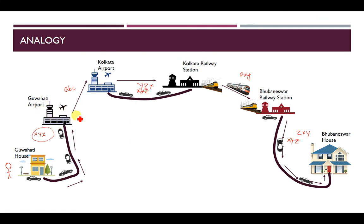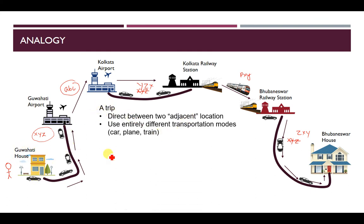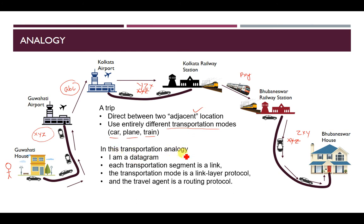The responsibility of XYZ company ends at Guwahati airport — that is the point-to-point communication. From Guwahati airport to Kolkata airport, ABC company takes charge. Now in this analogy, the trip from Guwahati house to Brunesor house is like a datagram. Each adjacent location uses a different transport mode, and the data link layer takes care of point-to-point communication between immediate adjacent locations.